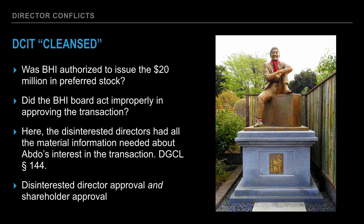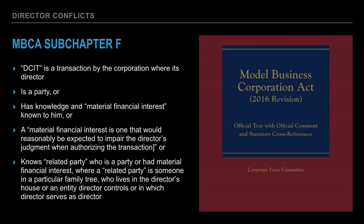Most recently amended in 2005, our even more modern statute — the Model Business Corporations Act, adopted in many states — Subchapter F has its own test for a director-conflicting interest transaction. It defines a DCIT as a transaction by the corporation where the director is a party, or has knowledge and a material financial interest known to the director, or a material financial interest is one that would reasonably be expected to impair the director's judgment when authorizing the transaction, or the director knows a related party who is a party or has a material financial interest. This related party being someone in a family tree who lives in the same household, or an entity the director controls, or one on which the director serves as a director.